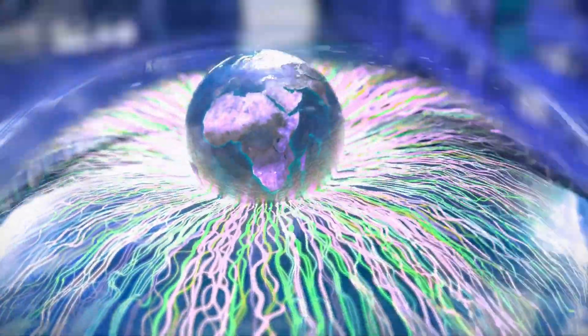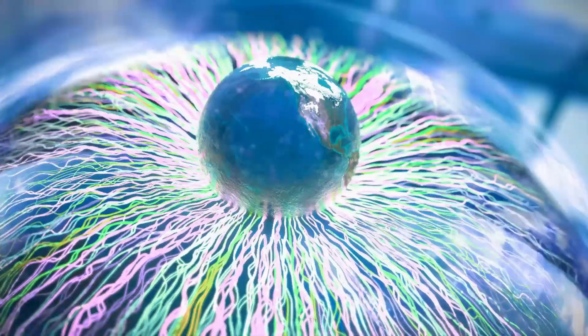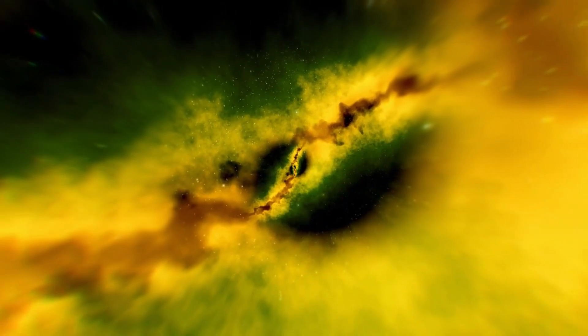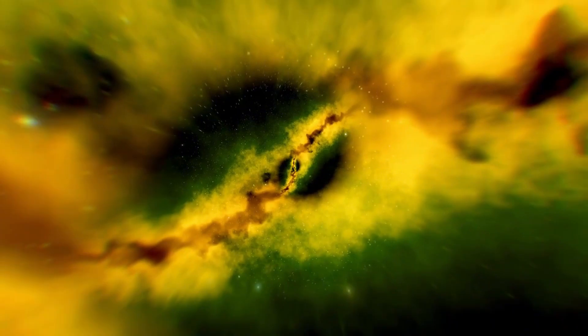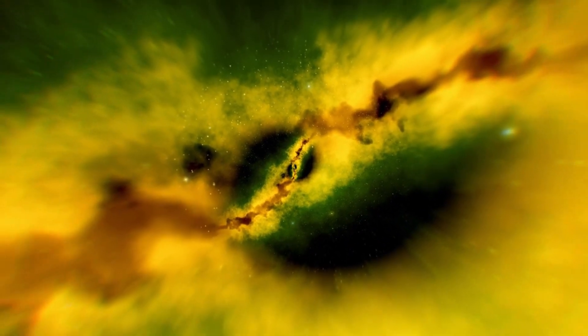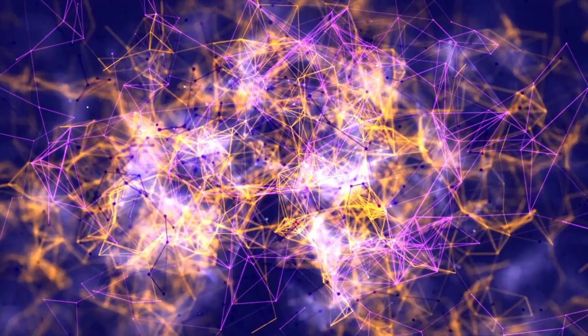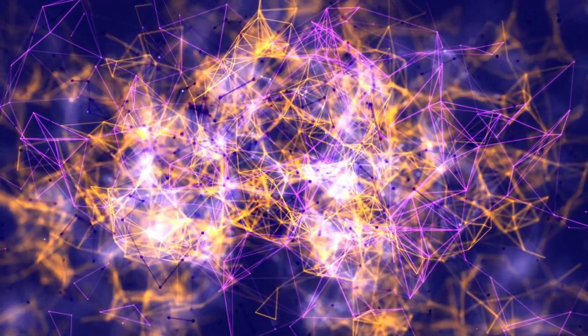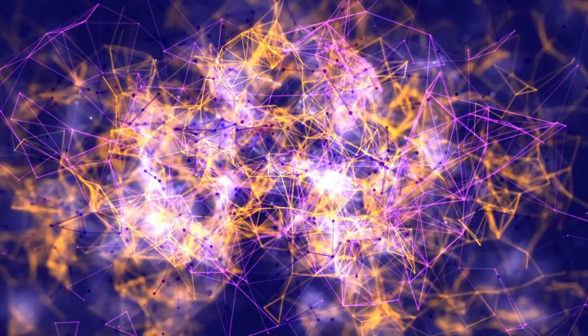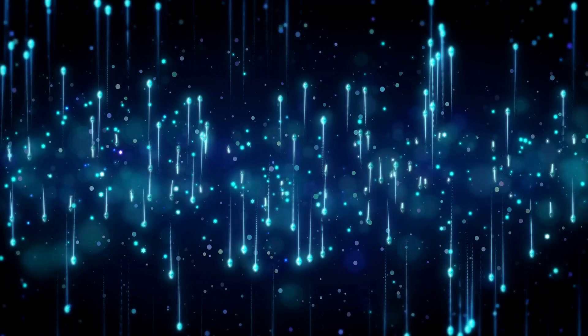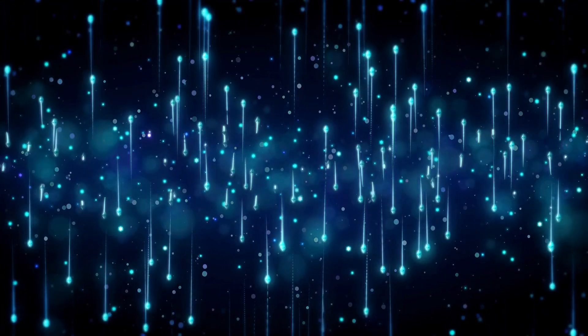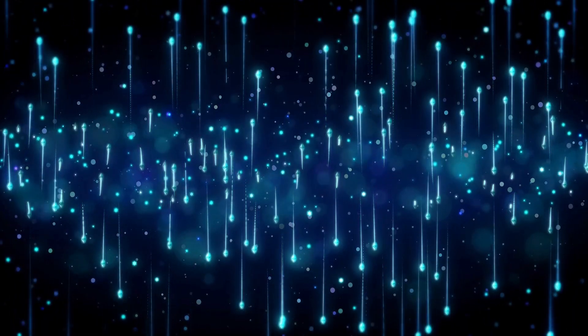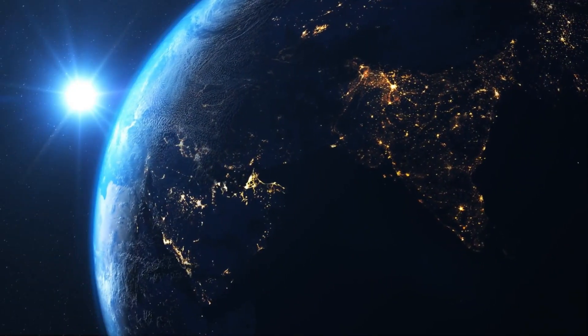The event horizon of a black hole represents a boundary that once crossed, there is no turning back. It is often described as a point of no return. Once something passes this threshold, it is drawn inexorably toward the singularity at the center of the black hole, where it is crushed to infinite density. Despite their importance in the black hole model, the event horizon is not something we can directly observe. In fact, the very definition of a black hole comes from the fact that light cannot escape its gravitational pull. This has made the study of what lies beyond the event horizon exceptionally challenging.